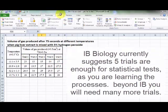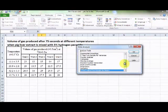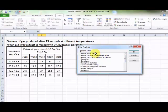To do an ANOVA, we come up to data, across to data analysis, scroll up to ANOVA single factor, because we only changed one variable.